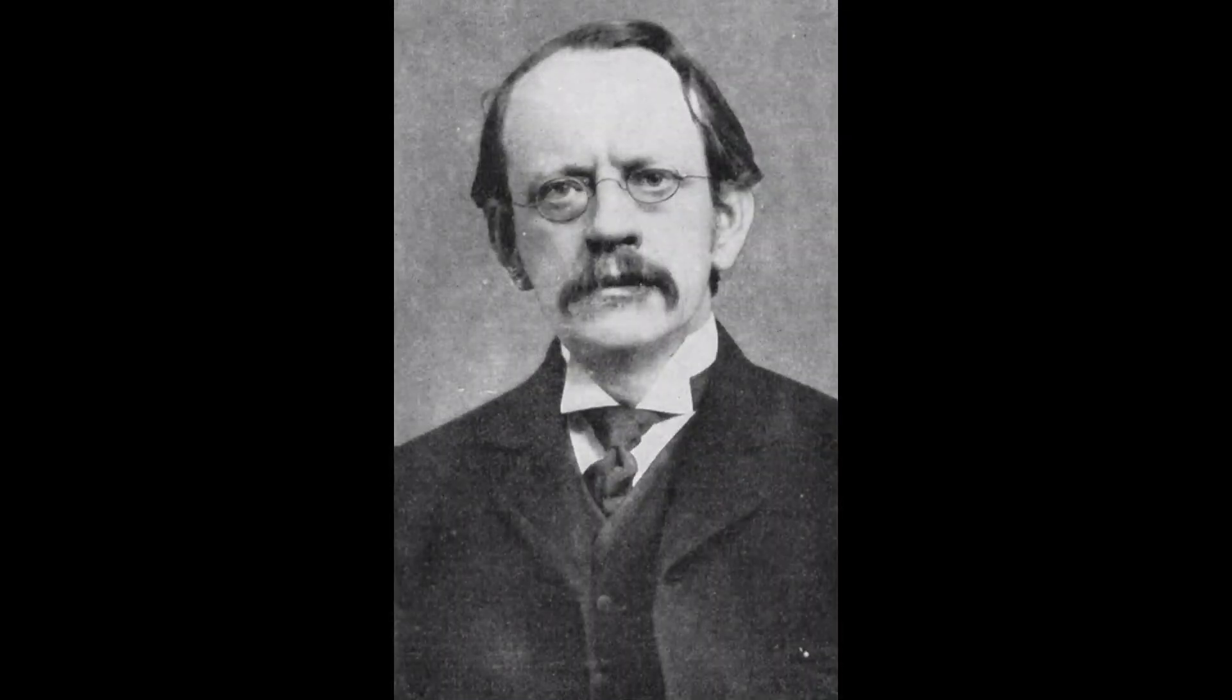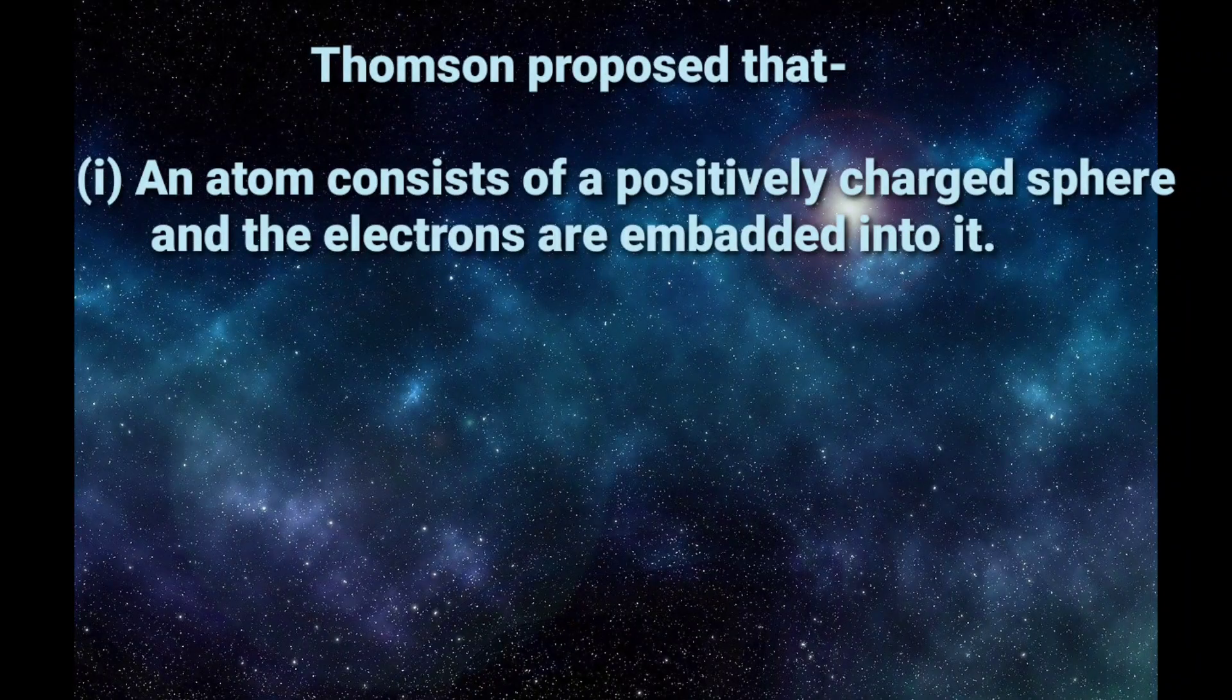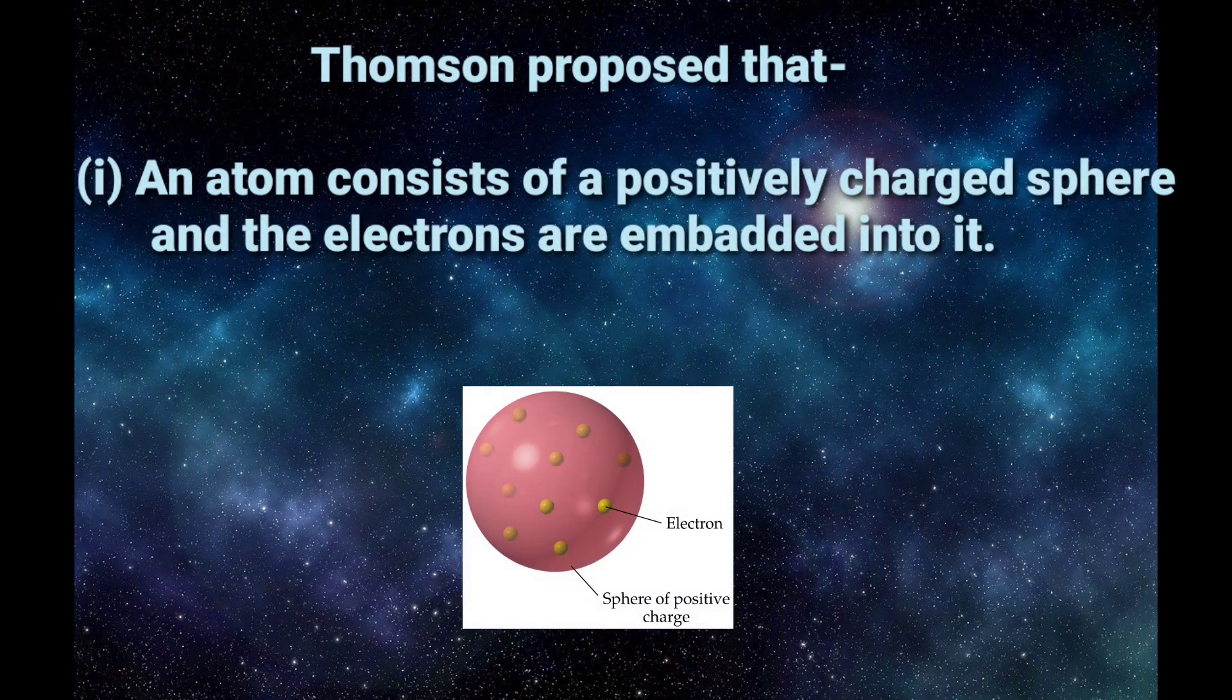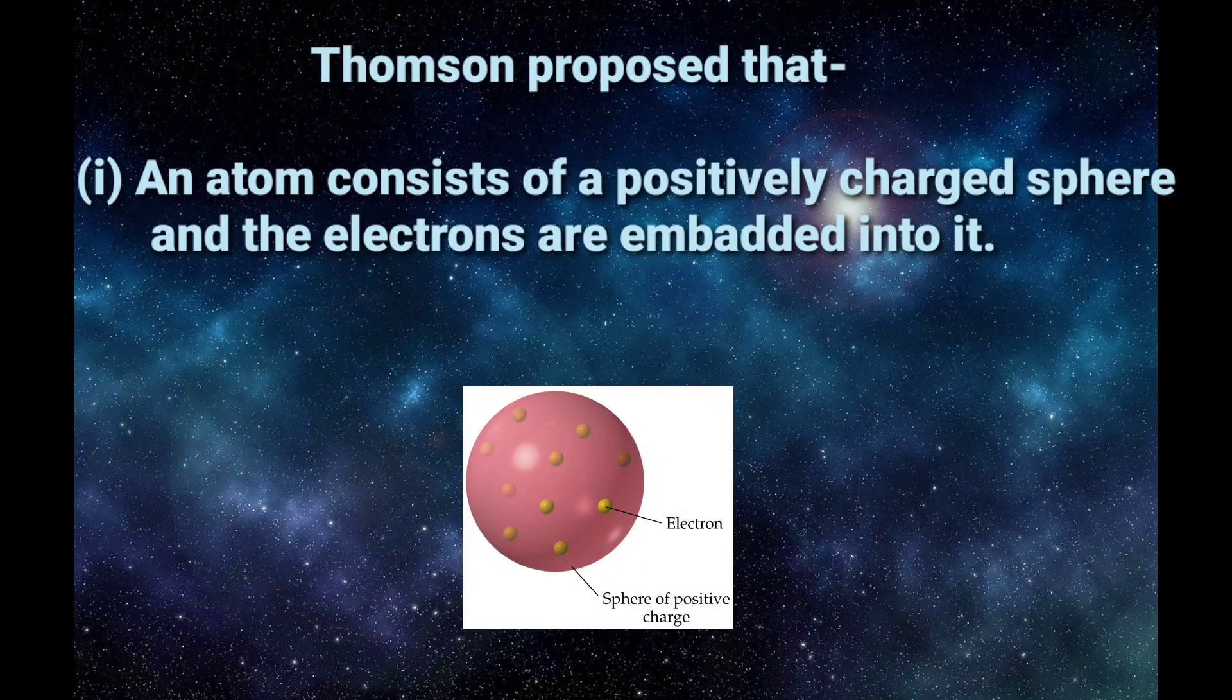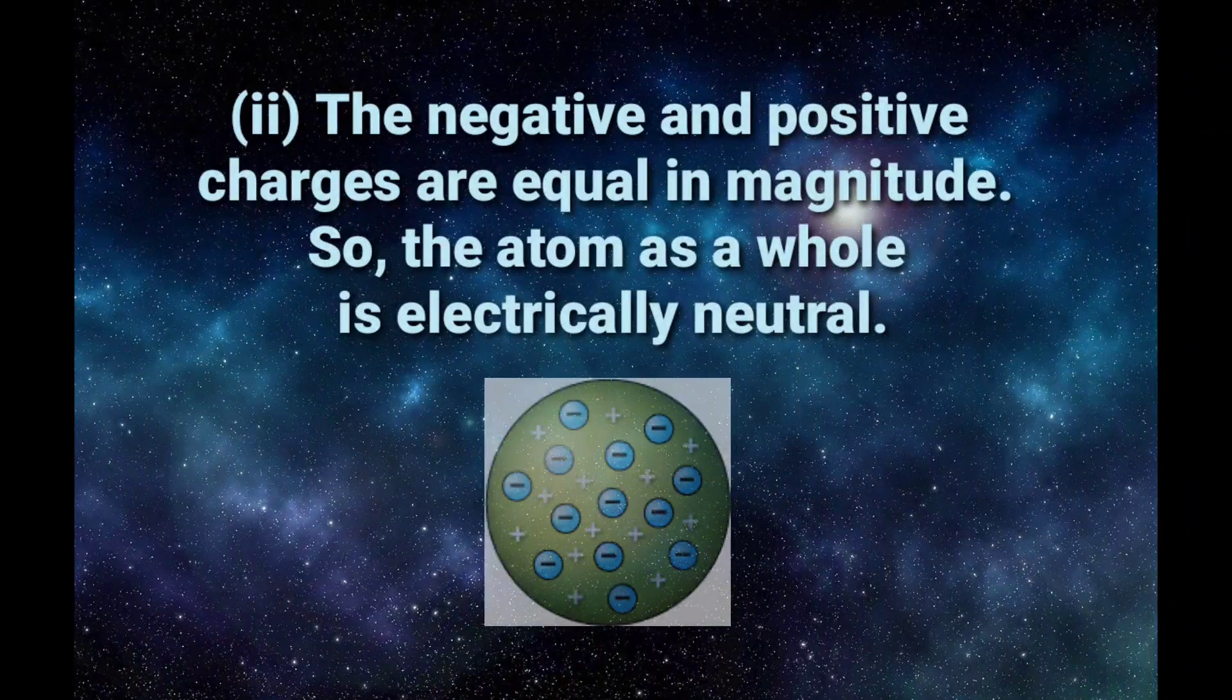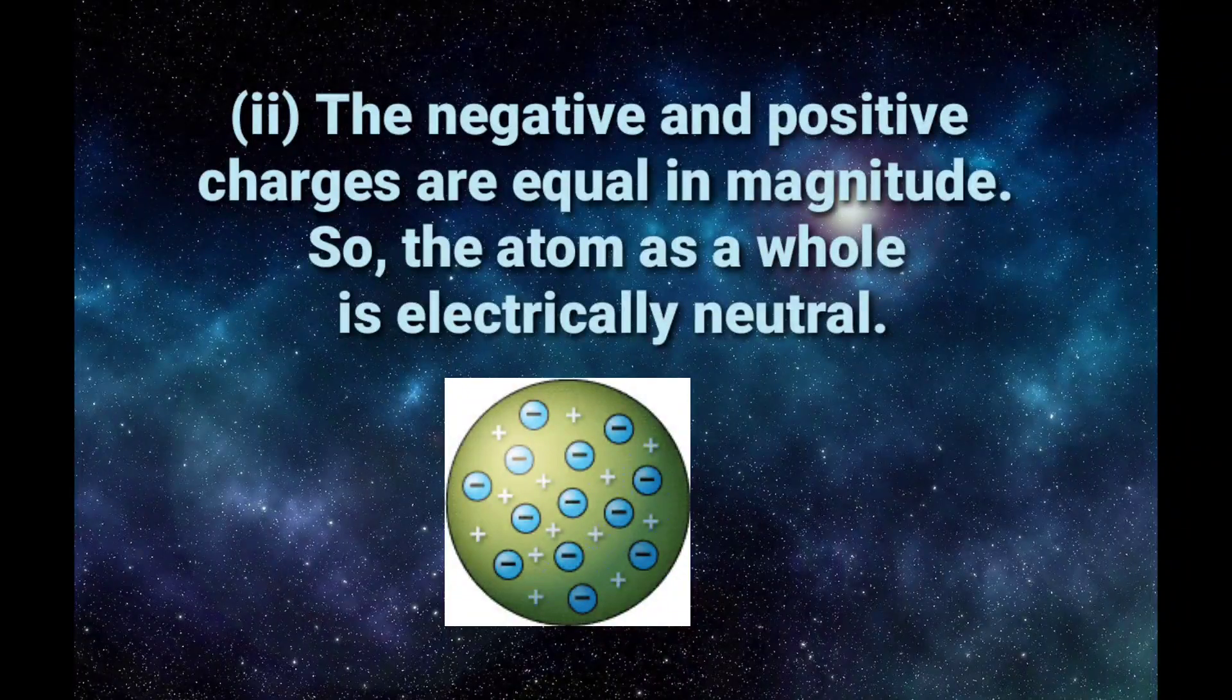Scientist Thompson proposed the model of an atom to be similar to a Christmas pudding model, that is the plum pudding model. Thompson proposed that number one, an atom consists of a positively charged sphere and the electrons are embedded into it. Number two, the negative and positive charges are equal in magnitude.